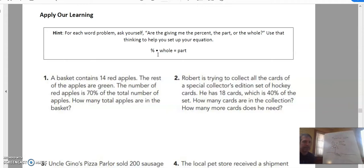Is that our total number of apples? I don't think it is. Because there are red and there are green. So that's going to be our part. So I'm just going to list out. I know my part is 14 red. The rest of the apples are green.